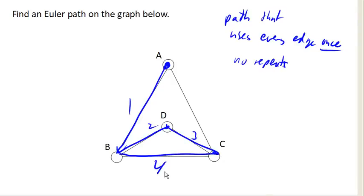And I could go here, and that's four, but now I'm stuck because I can't go anywhere, and I haven't visited every edge yet. So this was not a particularly good attempt at finding an Euler path. This is not an Euler path. So let's try again.